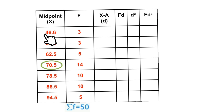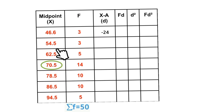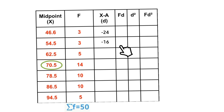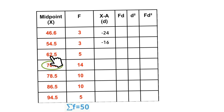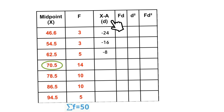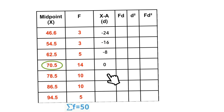Let's assume 70.5 to be the mean. First row: 46.5 − 70.5; followed by 54.5 − 70.5 = −16; 62.5 − 70.5 = −8; 70.5 − 70.5 = 0. We apply the same rule to fill up the rest of the spaces.